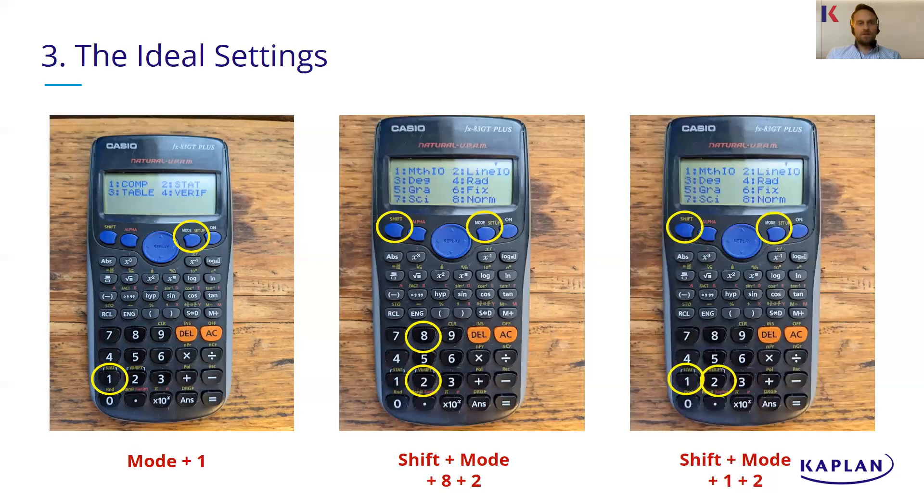Finally, if you want to do it so it's not showing you fractions or recurring decimals, if you do shift mode again to get this screen and then press one, so that's that math mode, and then it will say again one or two. And if you press two, that will then be for me the ideal setting. So you can still use the fraction button, which I'll show you in a minute, but all your answers will then just be displayed as normal decimals, which you can use in your answers.